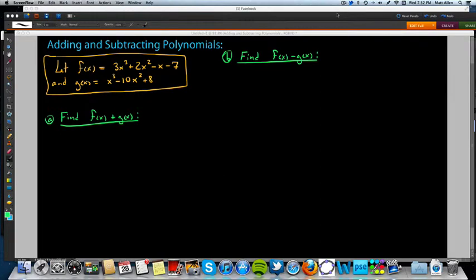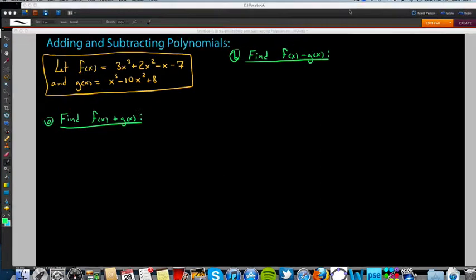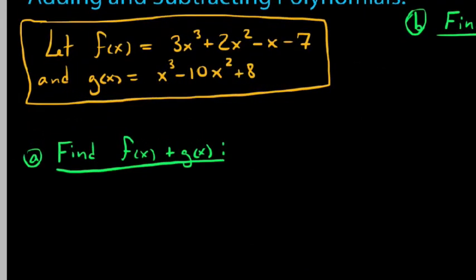Hello, YouTube. This is going to be a brief video on methods for adding and subtracting polynomial expressions. Let's go ahead and start by taking a look up here in the top left corner where I've defined two functions: f of x and g of x. F of x is this top function here, this third degree polynomial, 3x cubed plus 2x squared minus x minus 7, and g of x is this other third degree polynomial, x cubed minus 10x squared plus 8.